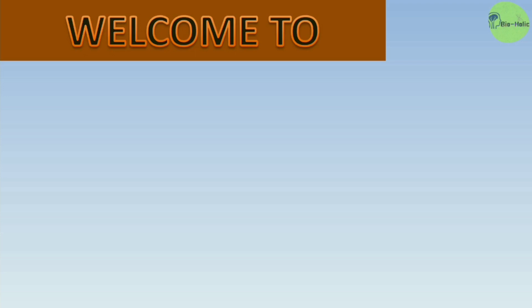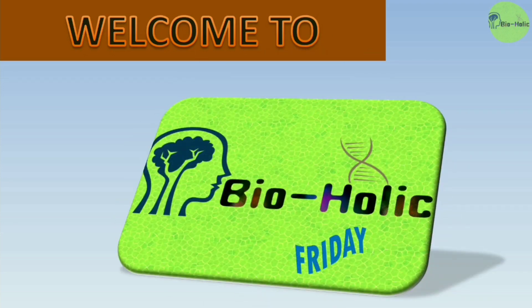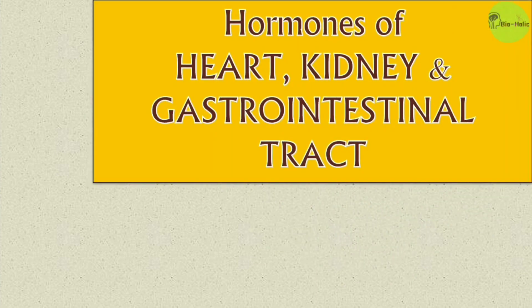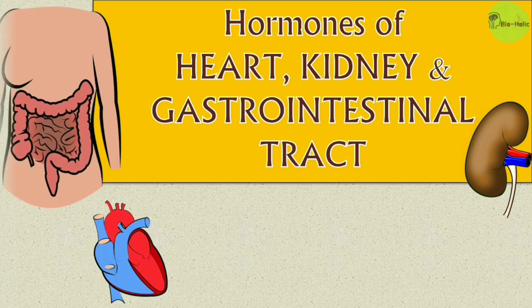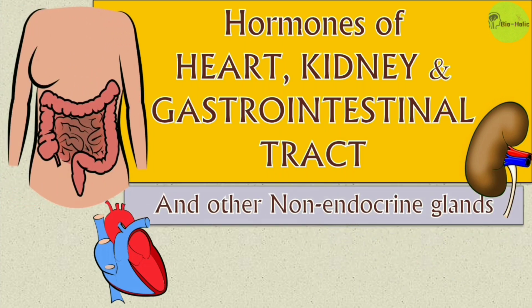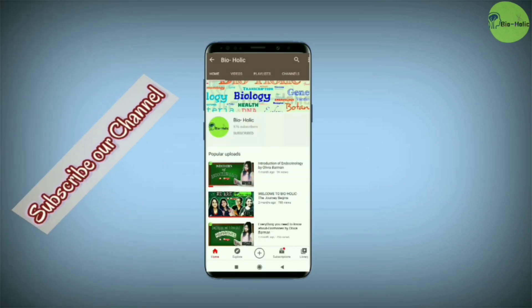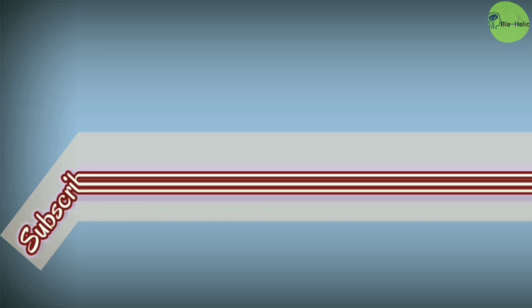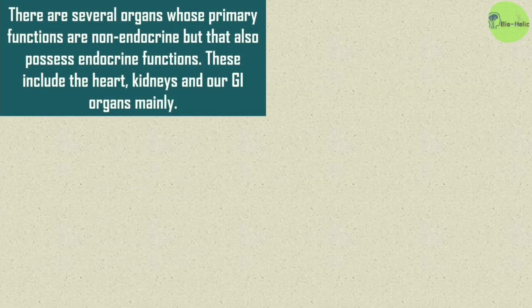Hello everyone, welcome once again to Bioholic. It's another Friday. This is the last part of the chapter 'Chemical Coordination and Integration.' Today I will discuss the hormones of heart, kidney, and GI tract, and also the other non-endocrine glands like pineal gland and thymus gland. There are several organs whose primary functions are non-endocrine but that also possess endocrine functions — they also secrete hormones. These include the heart, kidneys, and GI organs. These are called non-endocrine glands or non-endocrine tissues.